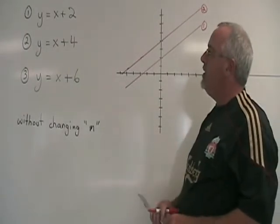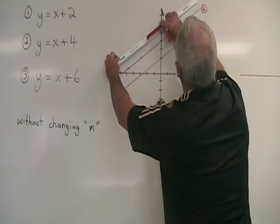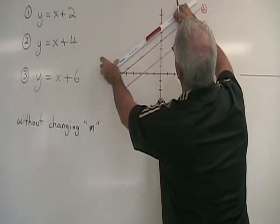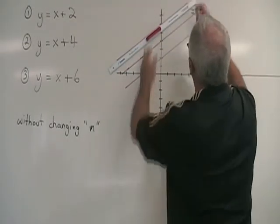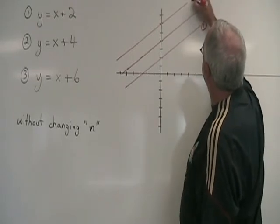And the third equation, y equals x plus 6, will give us a 45-degree angle line with respect to the x-axis, which goes through 6 on the y-axis.